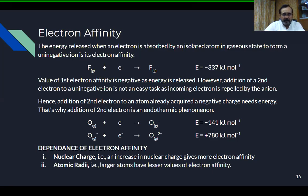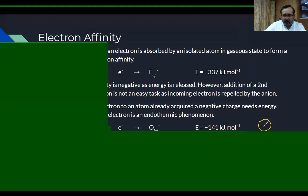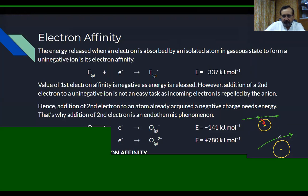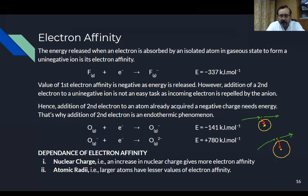Small atoms give more attraction to the outer incoming electron. For example, consider a small atom with its nucleus — the incoming electron experiences strong nuclear attraction. For a larger atom, the nucleus attracts the incoming electron less. So if the atomic size increases, the electron affinity decreases.